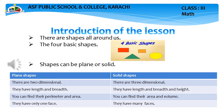Shapes can be plain or solid. What is the difference between a plain shape and a solid shape? Plain shapes are two-dimensional and solid shapes are three-dimensional.